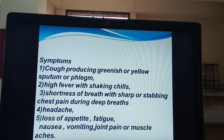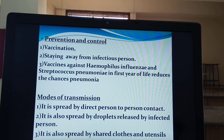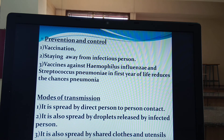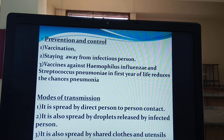Symptoms can be asked for two marks and causative agent for one mark. For prevention and control of pneumonia: staying away from the infectious person is most important. Secondly, vaccination — vaccines are available, and a vaccine against Haemophilus influenzae and Streptococcus pneumoniae given in the first year of life reduces the chances of pneumonia. It is spread by direct person-to-person contact, by droplets released by an infected person, and also by shared clothes and utensils.